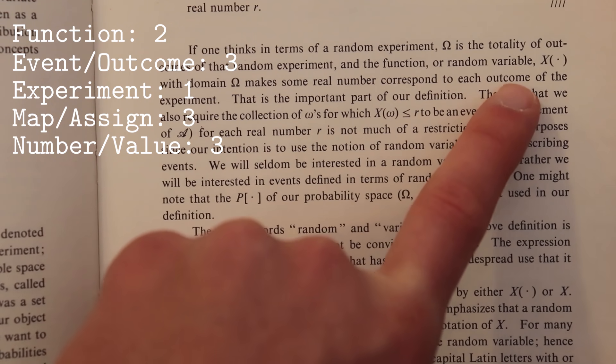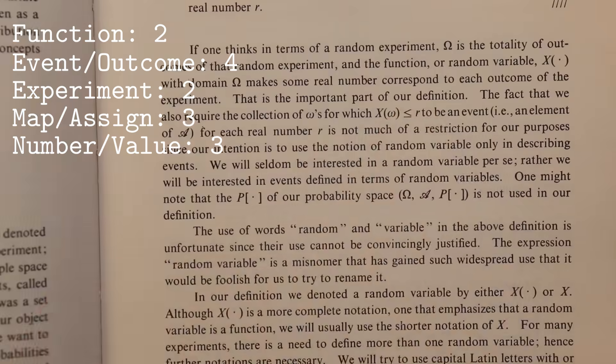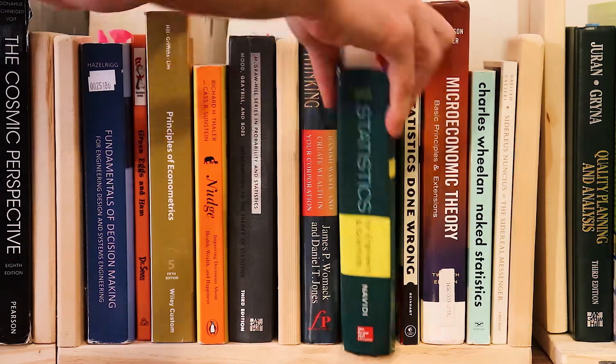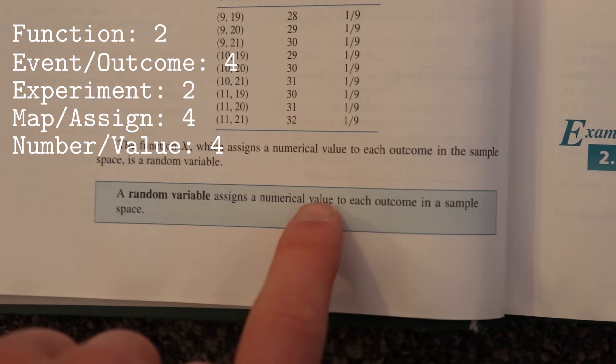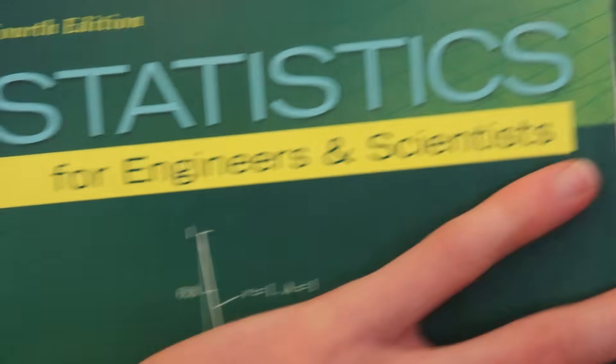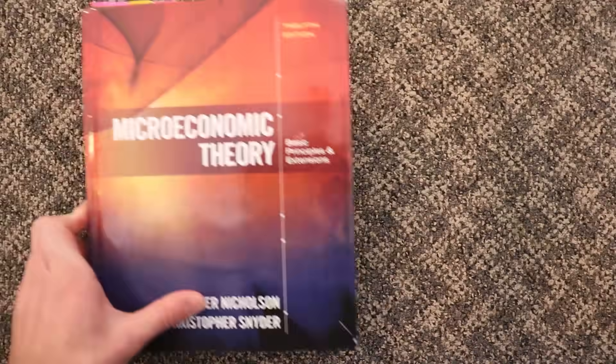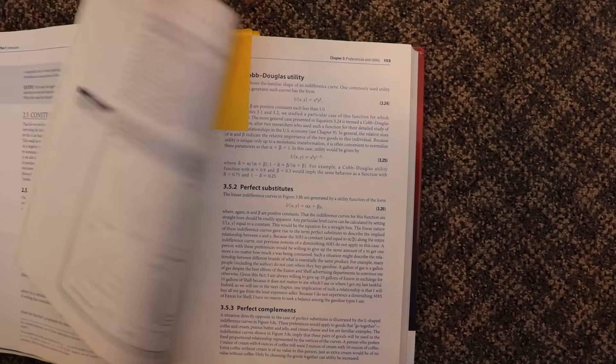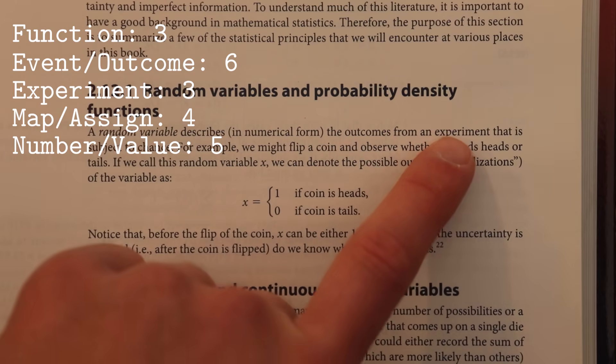It makes a real number correspond to each outcome of the experiment. And that's what's important. It assigns a value to an outcome. It describes numerically the outcome from an experiment.